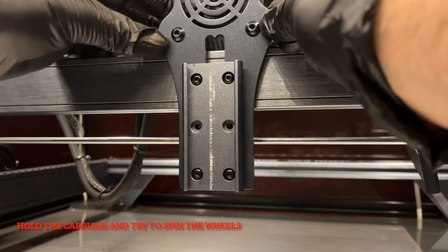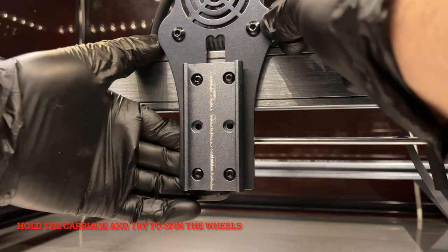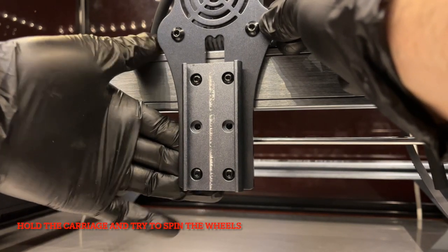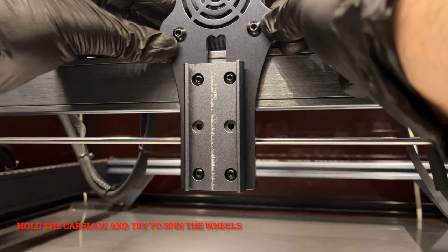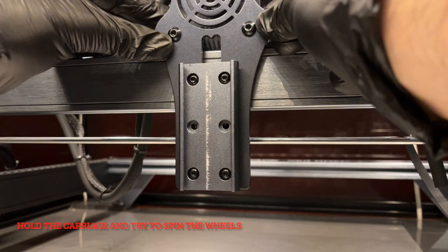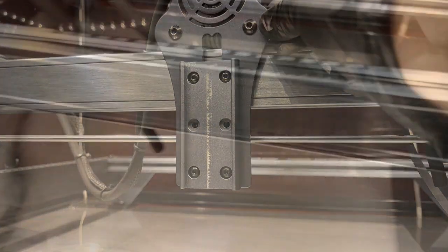Repeat the whole process for the other carriages. Remember to remove the belt every time you want to adjust the wheel's traction by the eccentric knot. Now that the carriages are set to have the right traction to the rails, it's time to mount the belts back on.